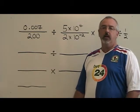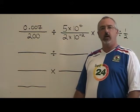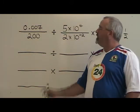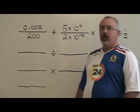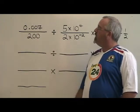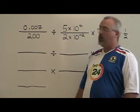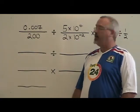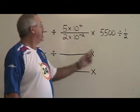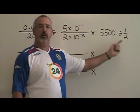This video will illustrate how to do a multiple step scientific notation problem, one that might look like this. Here we have 0.007 over 200 divided by 5 times 10 to the 4 over 2 times 10 to the negative 2 times 5500 divided by a half.